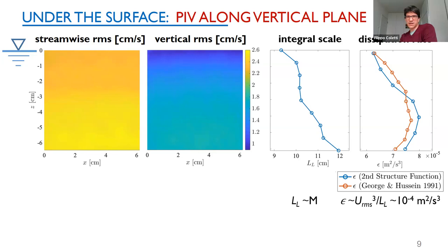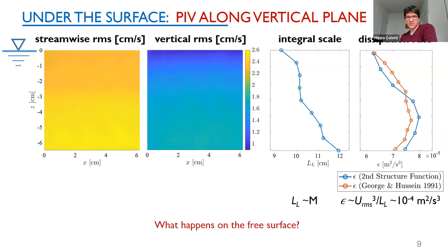Shifting now to the free surface, I have PIV data and fairly long particle trajectories. The PDF of the velocity fluctuations — streamwise in blue and lateral in orange — shows they are close to Gaussian with a slight skewness due to the extended streamwise region. The RMS velocity fluctuation is consistent with the subsurface PIV level.